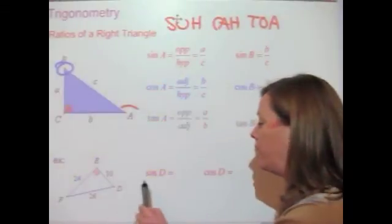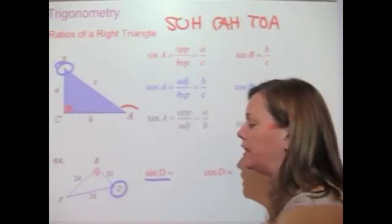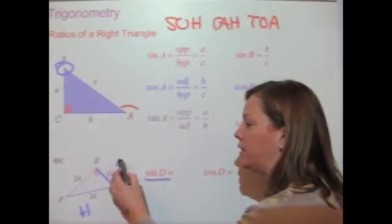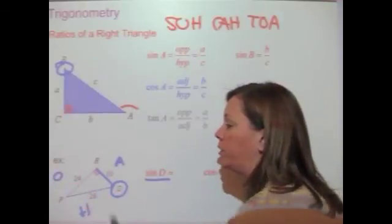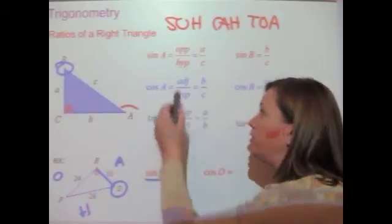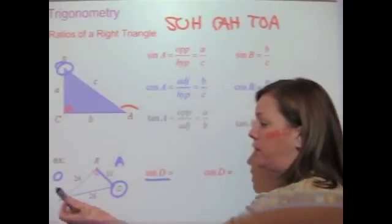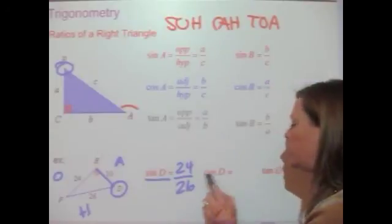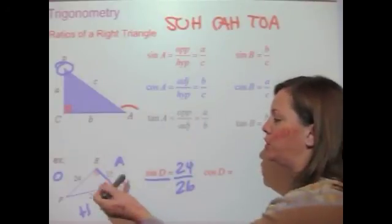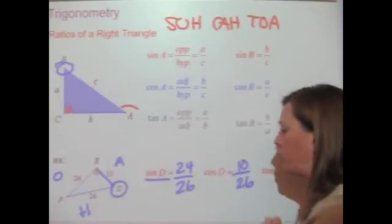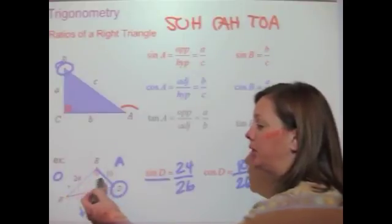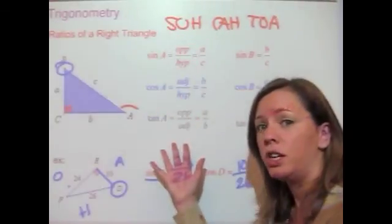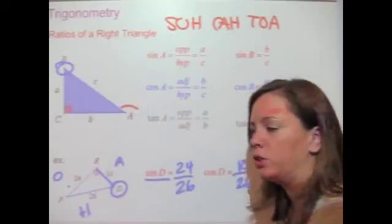Let's look at an example. If I want to find the sine of D, I label the triangle from angle D's perspective: the hypotenuse, the adjacent side attached to D, and the opposite side across from D. The sine of D is opposite over hypotenuse. In this case the opposite is 24 and the hypotenuse is 26, so sine of D equals 24 over 26. The cosine of D is adjacent over hypotenuse: 10 over 26. And the tangent of D is opposite over adjacent: 24 over 10.